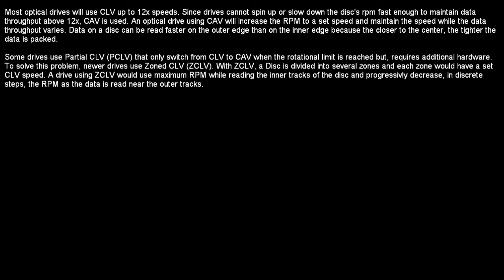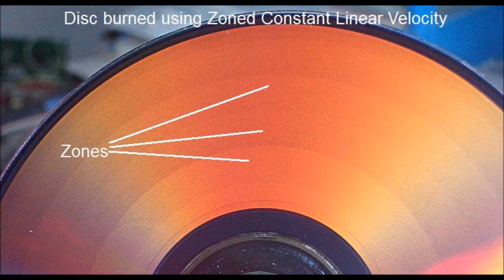To solve this problem, newer drives use zoned CLV. With zoned CLV, a disk is divided into several zones and each zone has a set CLV speed. A drive using zoned CLV would use maximum RPM while reading the inner tracks and progressively decrease in discrete steps the RPM as data is read near the outer tracks. A disk burned using a zoned CLV drive will show how the disk was divided into zones. The speed of the drive isn't how fast the disk is spinning, but rather how fast data can be read from the disk. These technologies allow data throughputs as high as 81 megabytes per second, compared to 1.35 megabytes per second for single speed.